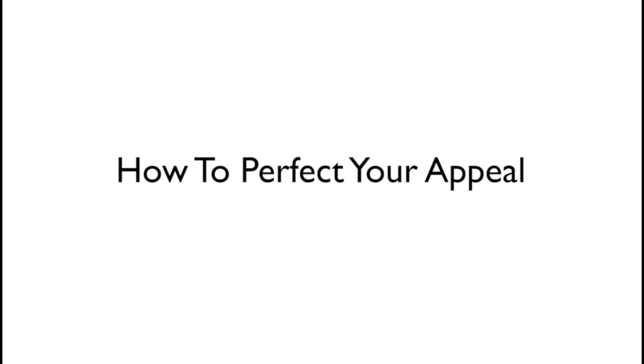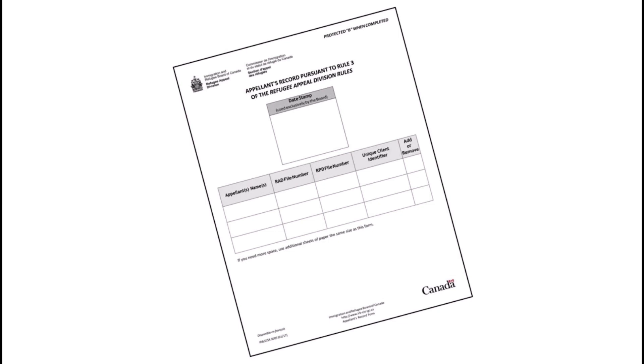We call it perfecting your appeal. Perfecting your appeal means that you complete an Appellant's Record. The RAD will not look at your case if you have not completed the Appellant's Record.